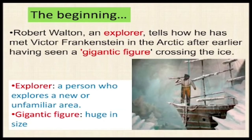In the beginning, Walton tells how he met Victor Frankenstein in the Arctic after earlier having seen a gigantic figure crossing the ice. He saw a very huge figure in the ice and narrates this event to his sister. Later, when he meets Victor Frankenstein, he again narrates his story in another series of letters.